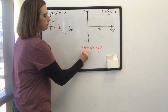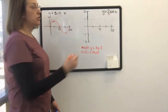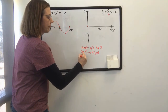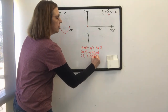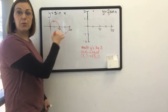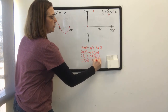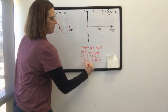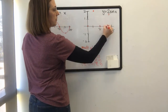We're going to take these five key points and multiply every one of their y-values by 2. The first point, (0, 0): multiply the y-value by 2, we still get (0, 0). The next one, (π/2, 1): multiply the y-value by 2, we get (π/2, 2). Every single point, we're multiplying only the y-values by 2. So (3π/2, -1): multiply the y by 2, we get (3π/2, -2). And then of course (2π, 0).